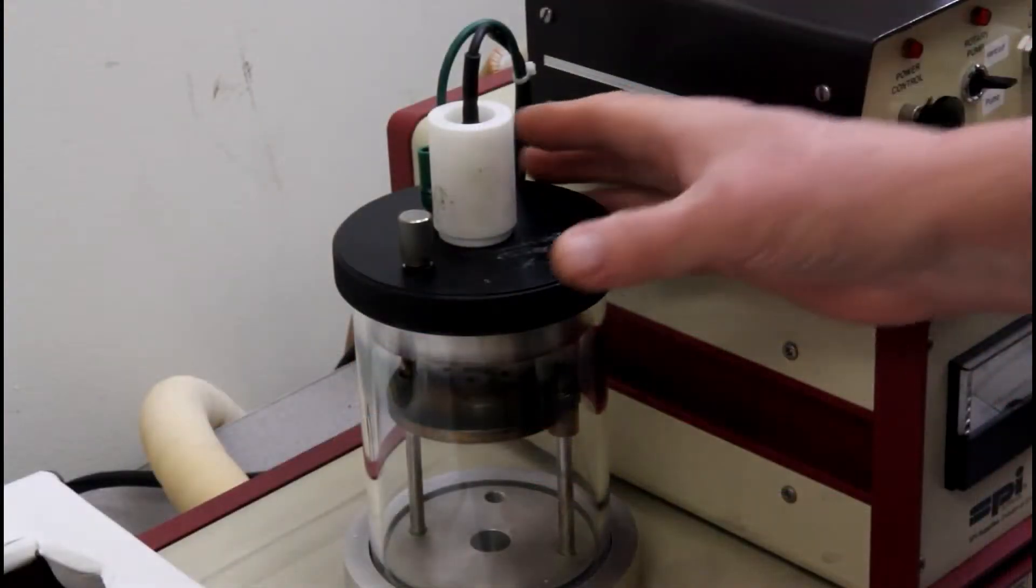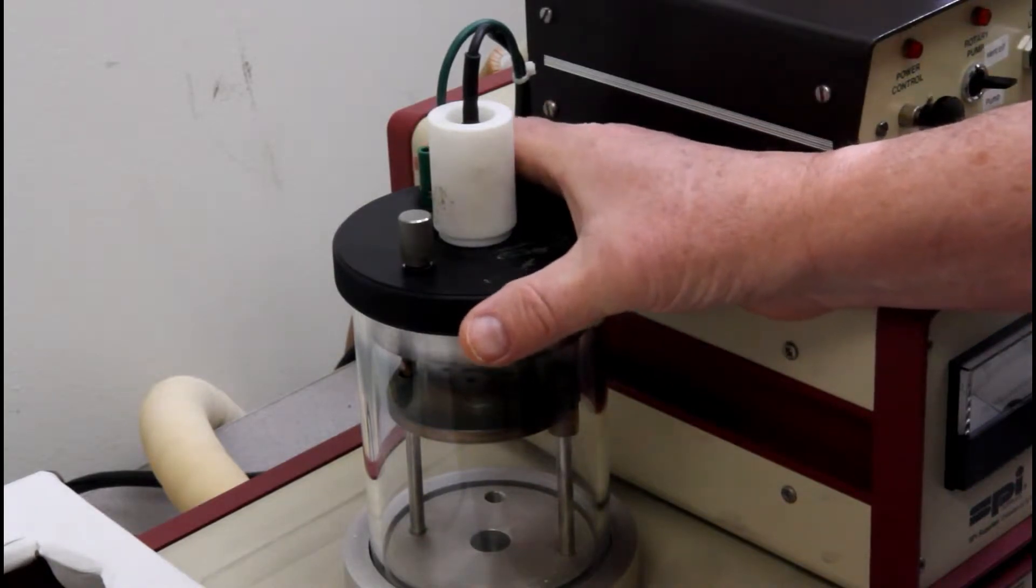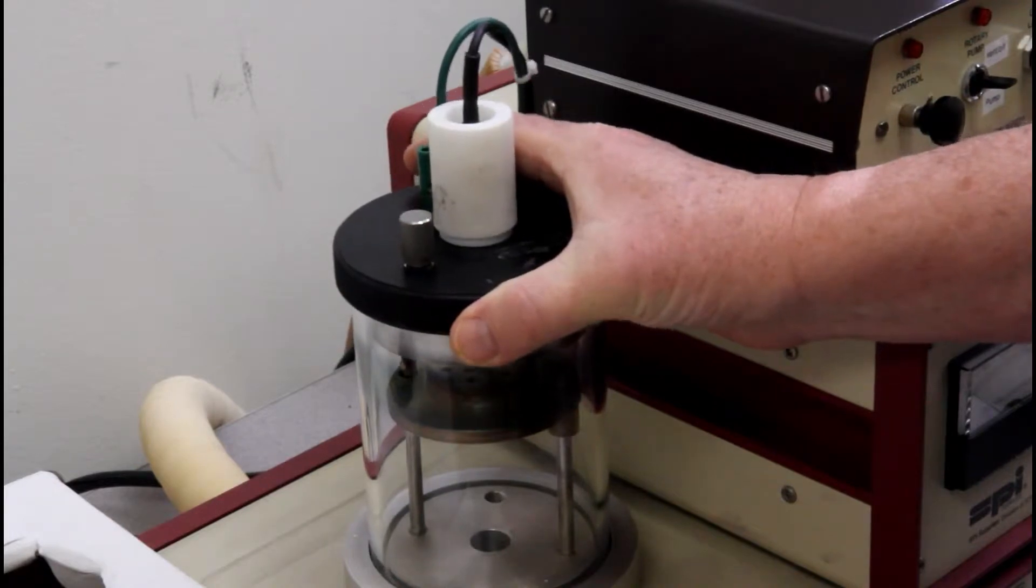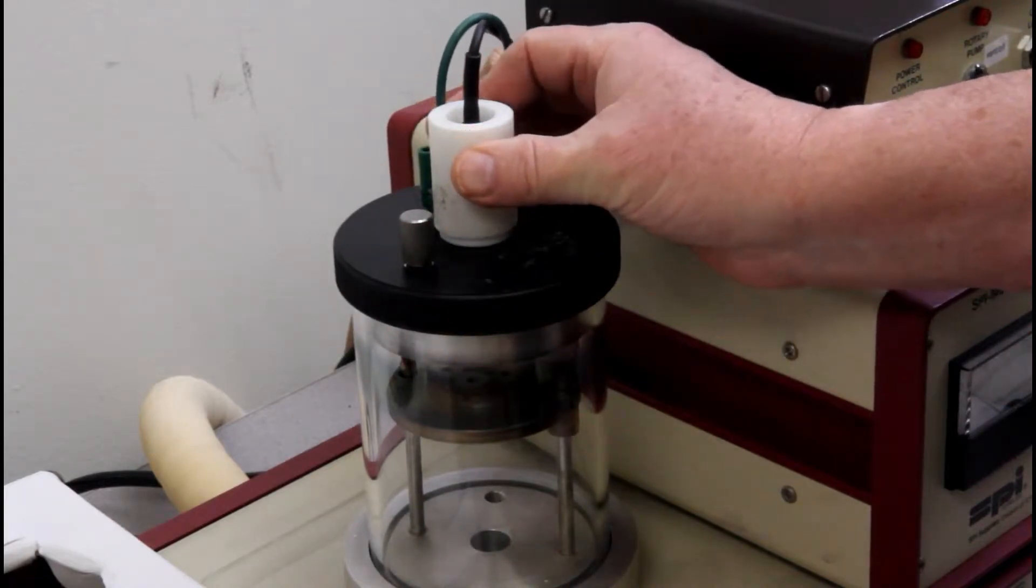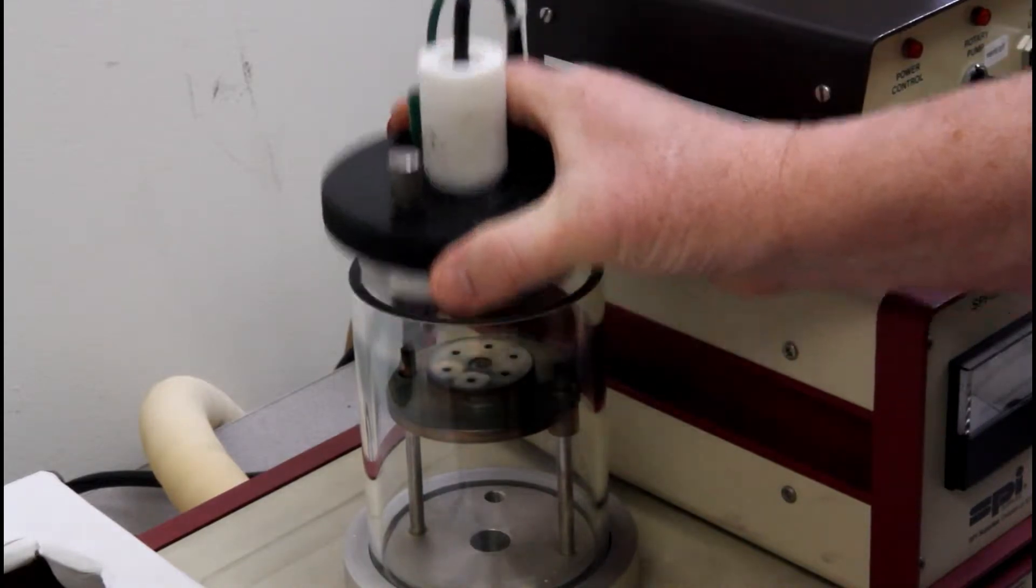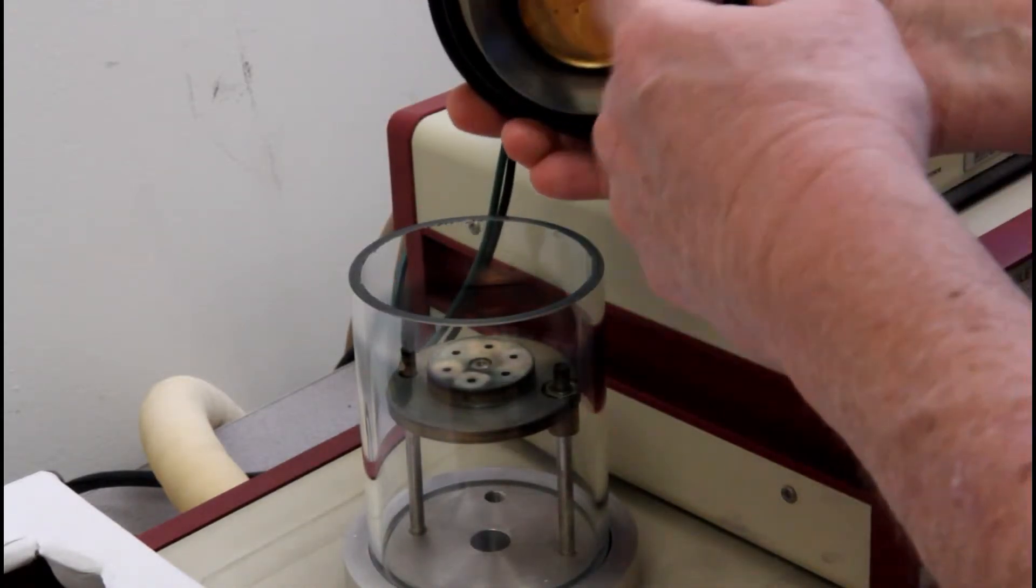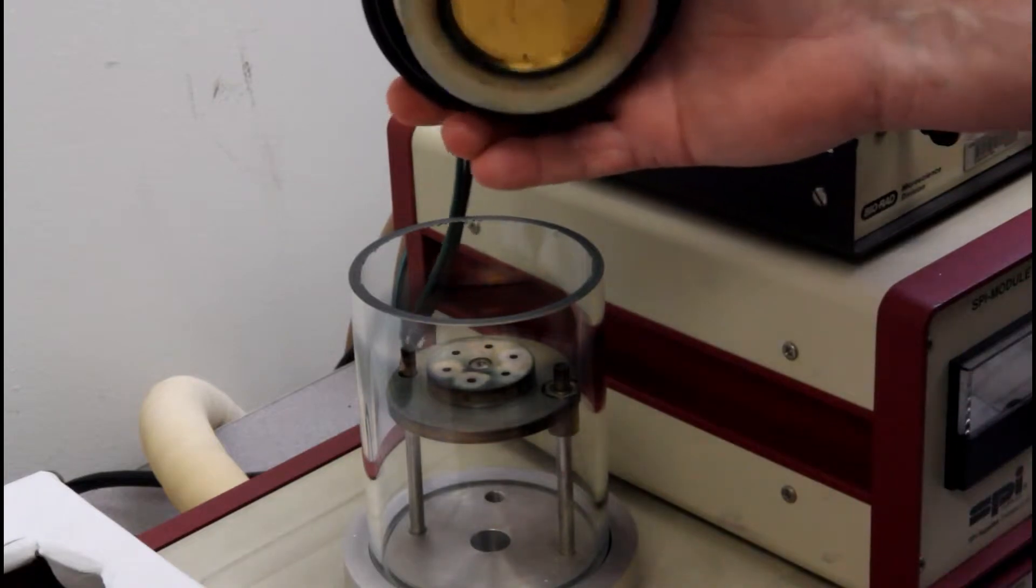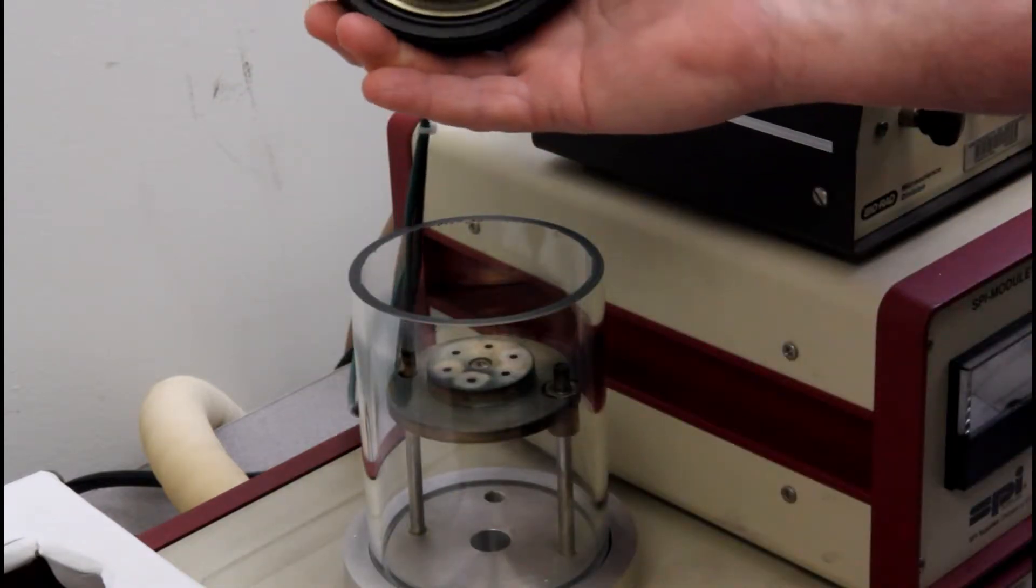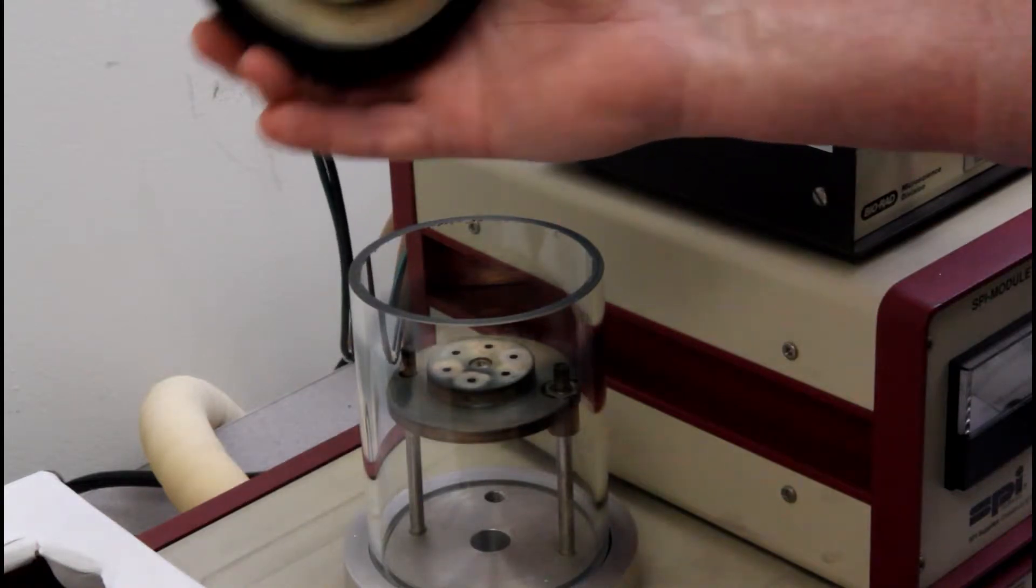When putting the sample into the sputter coater, you'll lift the head and you'll hold it like this. Do not pick it up by this. These will come off, they're just merely plugged in to the surface. So you'll lift this up and underneath you can see the target, the gold target. There's also an O-ring around the outside. You just want to quickly inspect it to make sure that there's no debris.